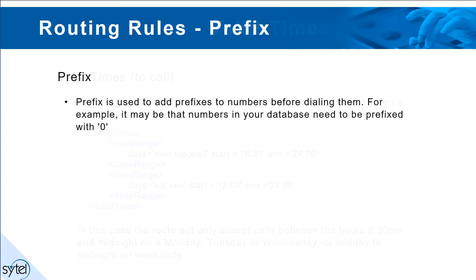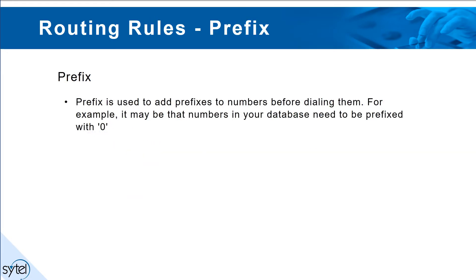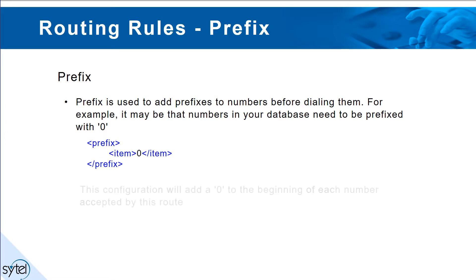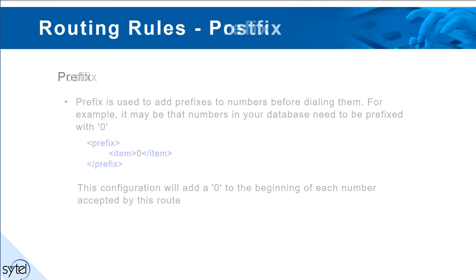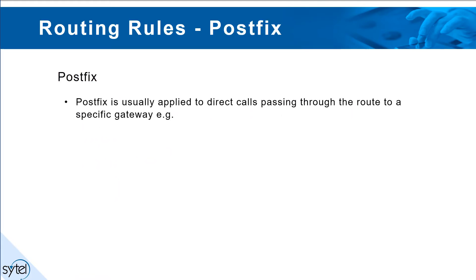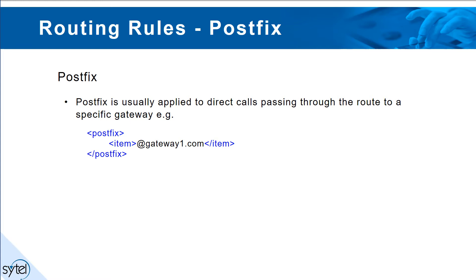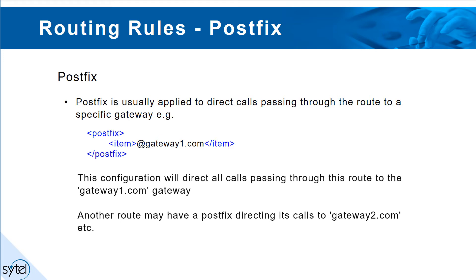Prefix: prefix is used to add prefixes to numbers before dialing them. For example, it may be that the numbers in your database need to be prefixed with zero. This configuration will add zero to the beginning of each number accepted by the route. Postfix: postfix is usually applied to direct calls passing through the route to a specific gateway. In most cases we are suffixing the destination IP address of the SIP provider or device we want to send calls to. This configuration will direct all calls passing through this route to the gateway gateway1.com. Another route may have a postfix directing its calls to gateway2.com and so forth.